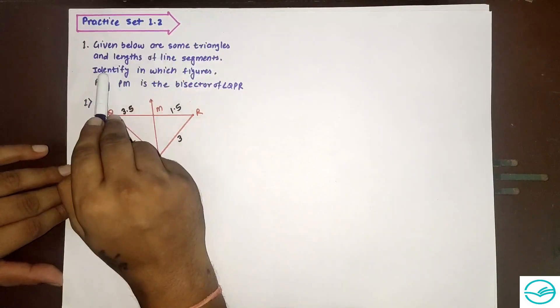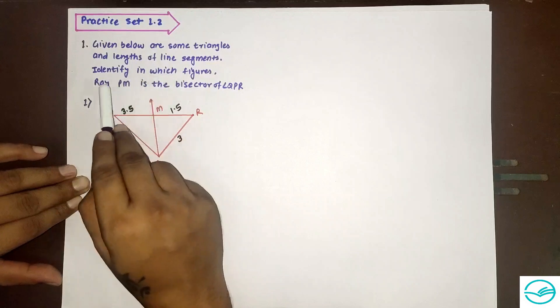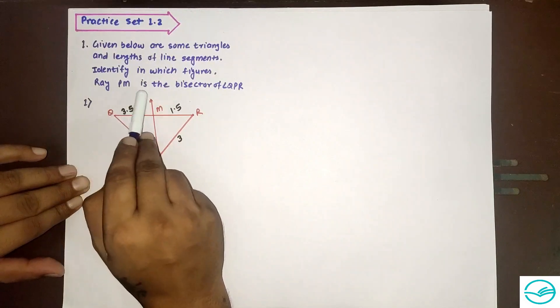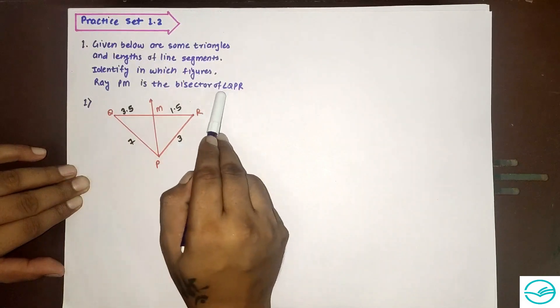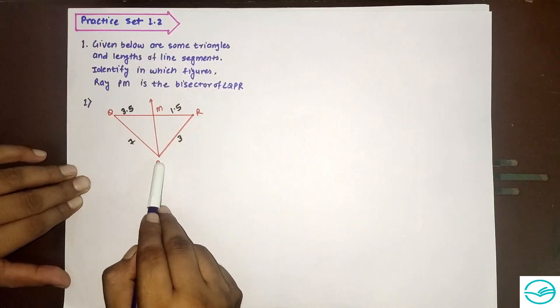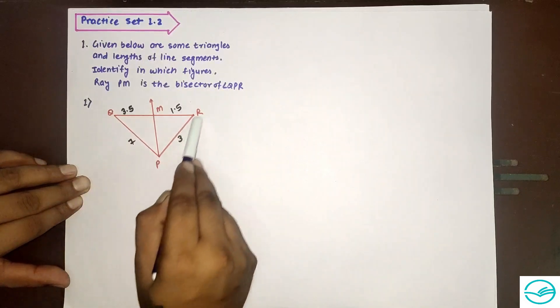Practice set 1.2, first question: given below are some triangles and lengths of line segments, identify in which figures ray PM is the bisector of angle QPR.